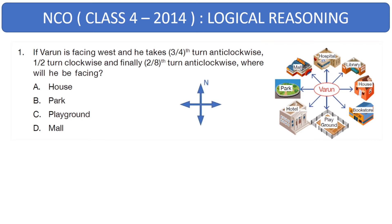In such a question where there is no direction given, we assume that north is upwards. And if north is upwards, then the left of it is west direction. Our first statement is Varun is facing west. That means Varun starts from the park. Then he takes 3/4th turn anti-clockwise. Anti-clockwise is this direction and 3 by 4 is when we divide the circles into 4 equal parts and shade 3 parts. That means it is 3 quarters. From park, 3 quarters anti-clockwise will land us to hospital.